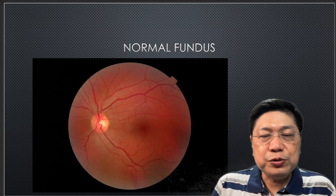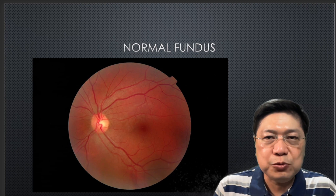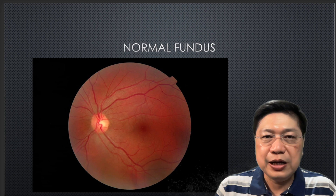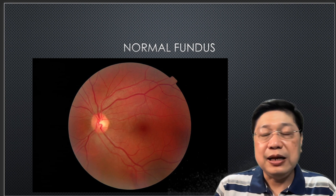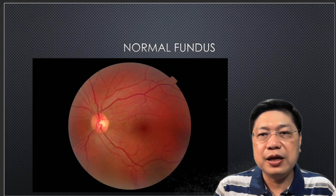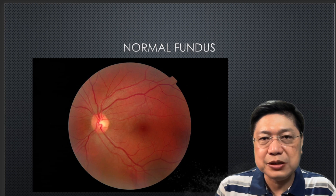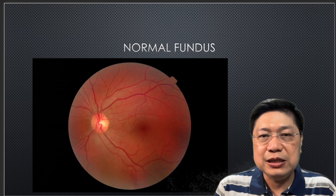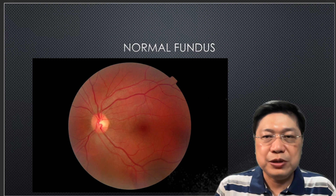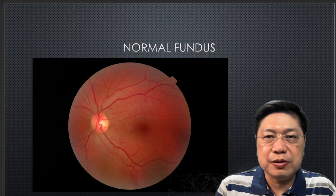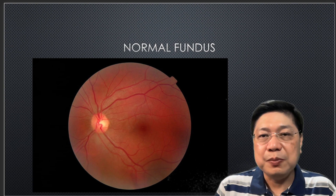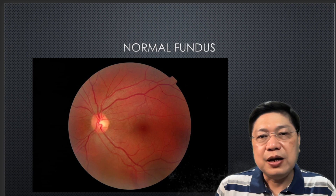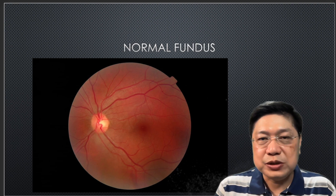The fundus that you are looking at would usually look like this. Whenever you are trying to examine the patient's eye, try to look for the landmarks — in this case the optic nerve and the macula. Those are your landmarks. You can follow the blood vessels, as all the blood vessels will lead you to the optic nerve. From the optic nerve you can find the macula, which is about two to two and a half disc diameters towards the center.